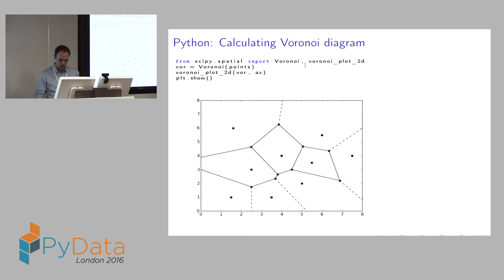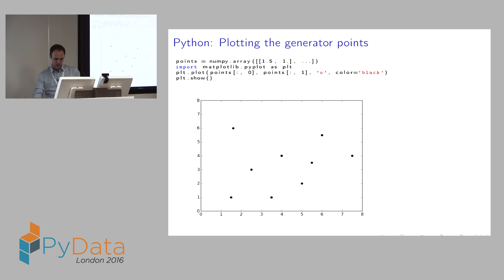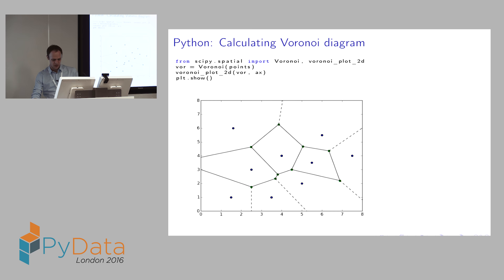To actually compute the Voronoi diagram, you use the Voronoi class from SciPy Spatial. Once you import this class, all you have to do is put your points into it, and the resulting object does all the calculations for you — the 'vor' variable contains all the information of the diagram. To plot it, you import VoronoiPlot2D and pass the calculated diagram into that function together with an axis object. The dashed lines represent polytopes that go to infinity — distinguishing finitely big polytopes from those with a vertex at infinity.